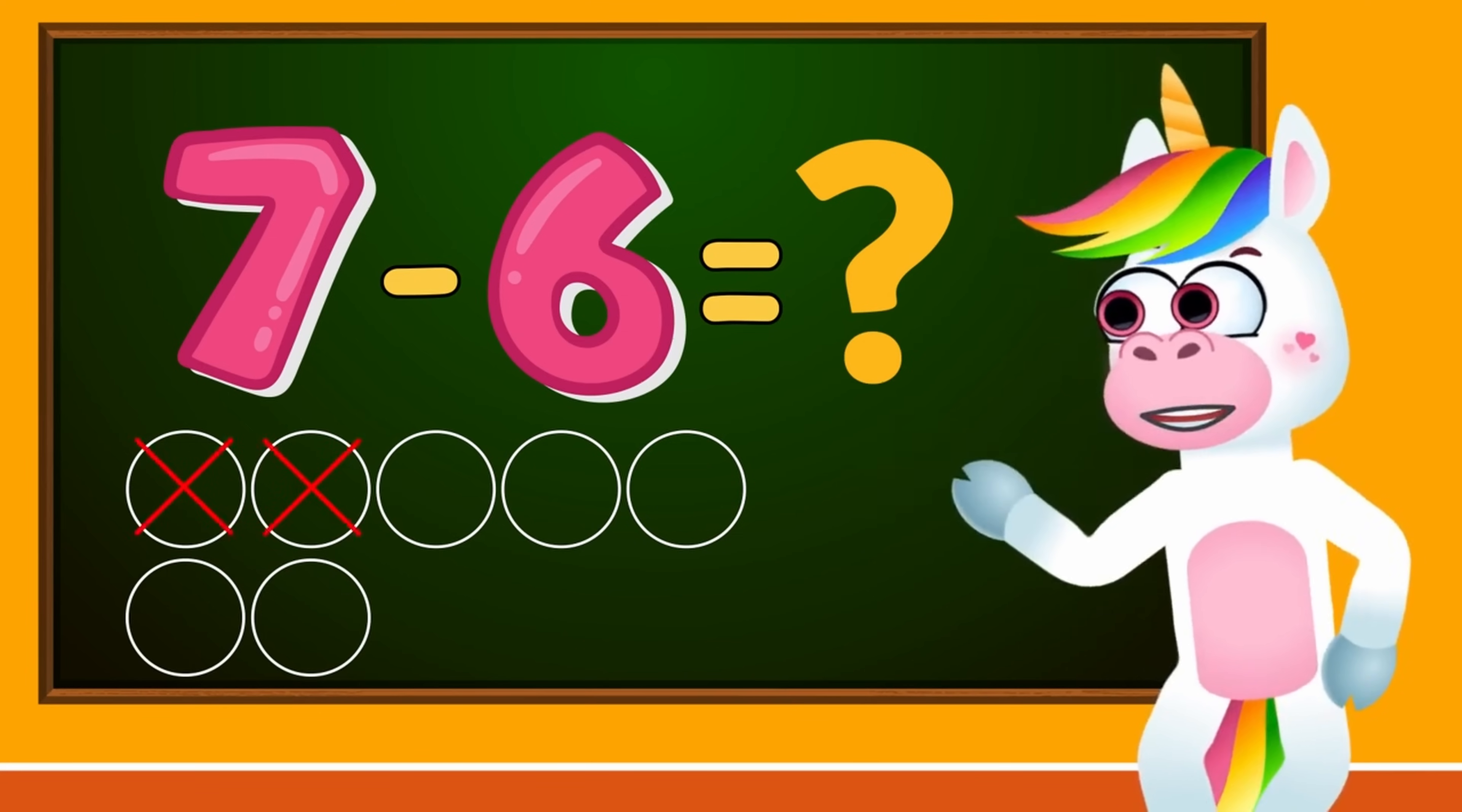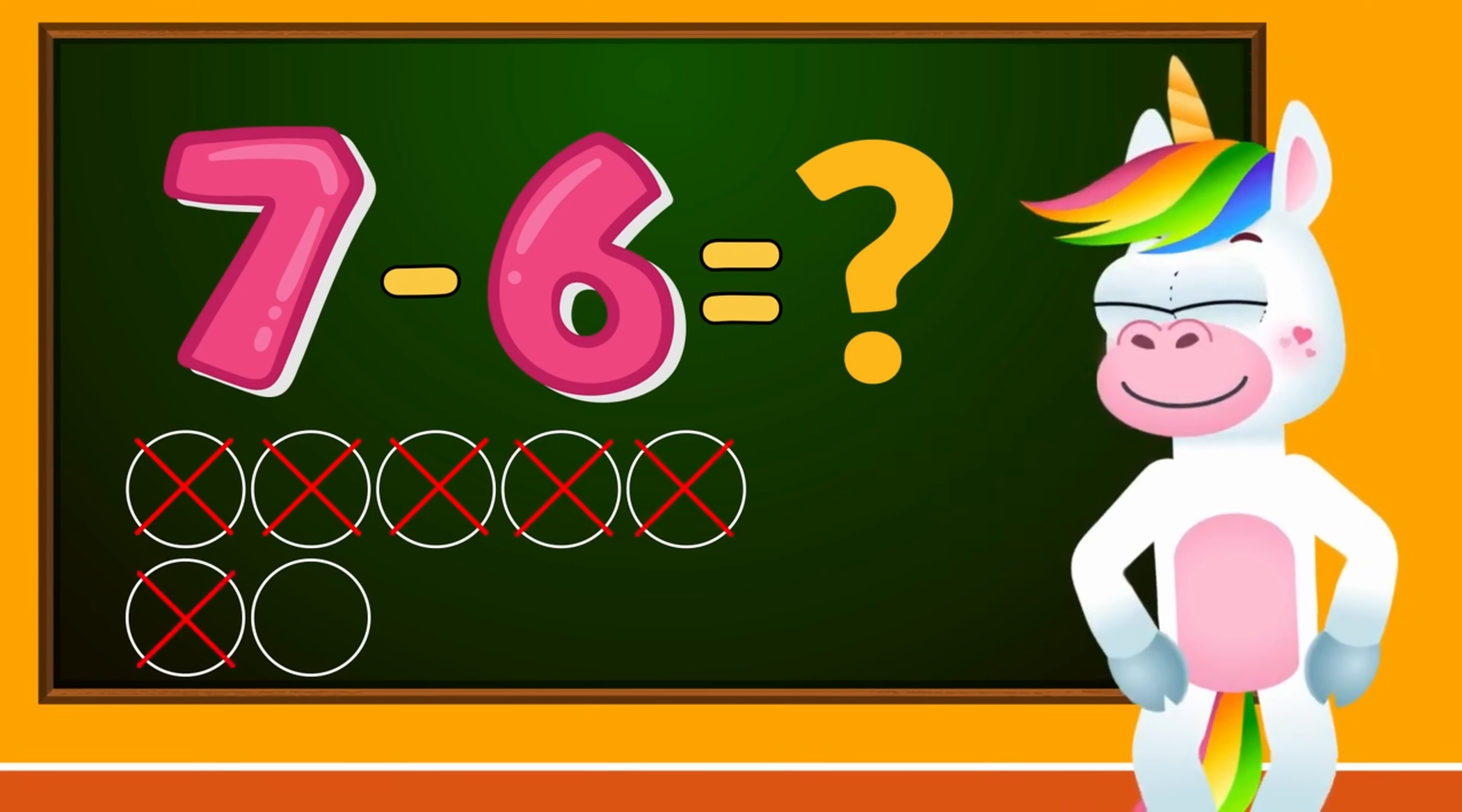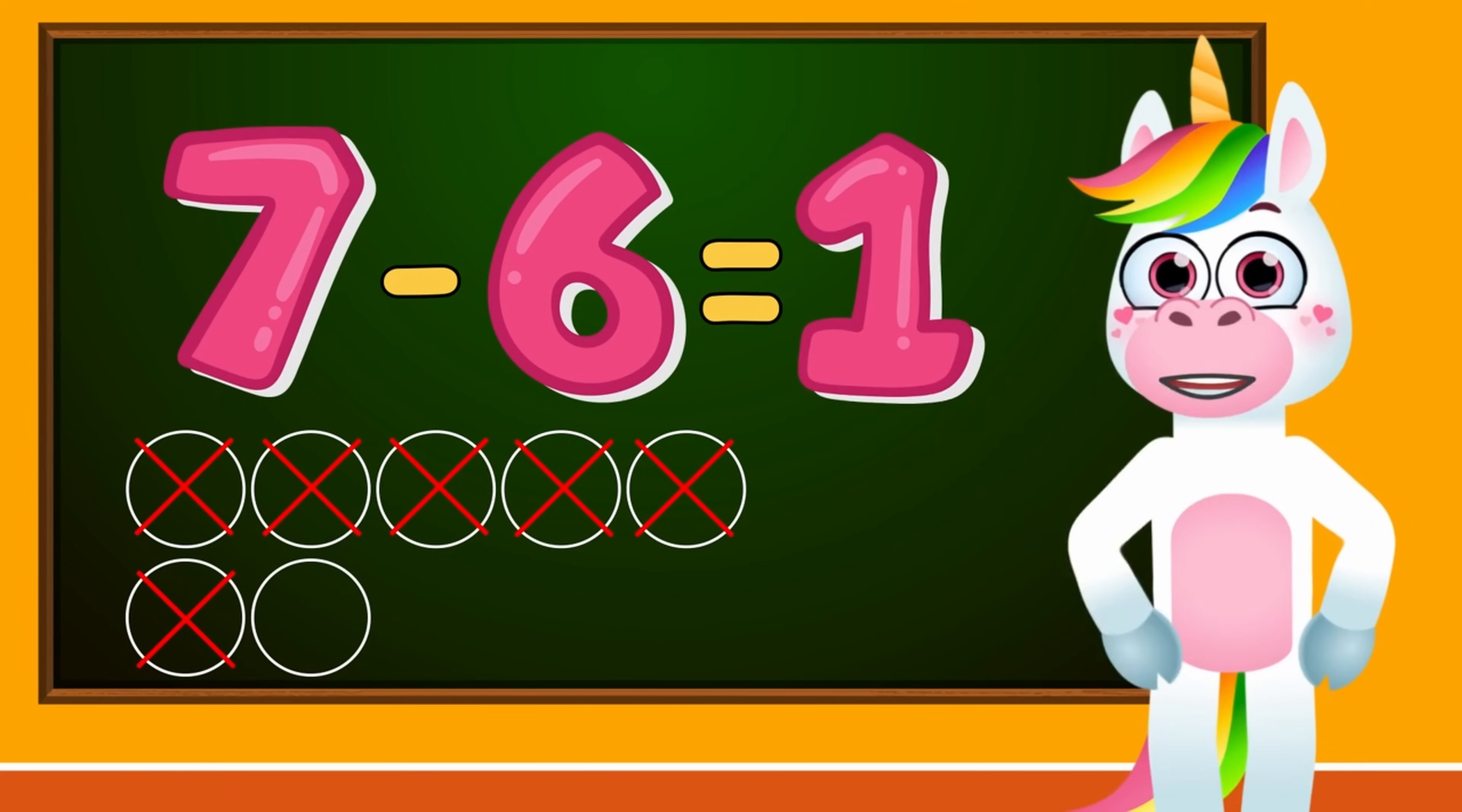1, 2, 3, 4, 5, 6. We only have one circle left, kids. So, 7 minus 6 equals 1.